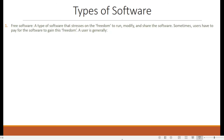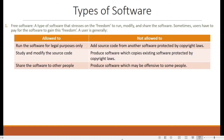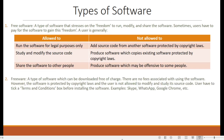Finally, the types of software. Free software: a type of software that stresses on the freedom to run, modify, and share the software. Sometimes users have to pay for the software to gain this freedom. A user is generally allowed to run the software for legal purposes, study and modify the source code, and share the software to other people. However, the user is not allowed to add source code from another software protected by copyright laws, produce software which copies existing copyrighted software, and produce software which may be offensive to some people. Freeware: a type of software which can be downloaded free of charge with no fees associated. However, the software is protected by copyright laws, and the user is not allowed to modify and study source code.